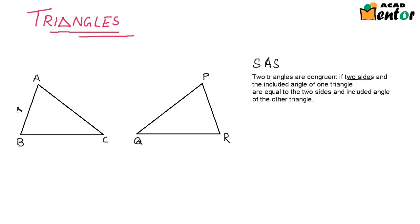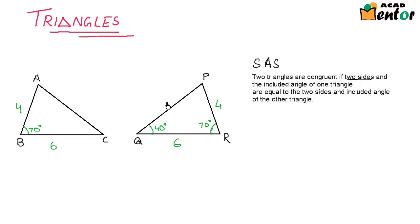If we are given that AB is 4 units long, BC is 6 units long, and angle ABC measures 70 degrees for triangle ABC. In triangle PQR, we are given that one angle is 70 degrees, angle Q is 40 degrees, QR measures 6 units, PR measures 4 units, and PQ measures 5 units. Let us consider these two triangles — triangle ABC and triangle PQR — and see if they are congruent.